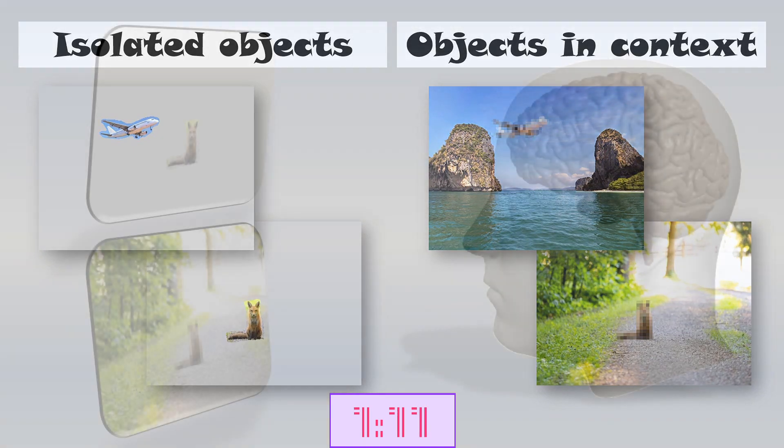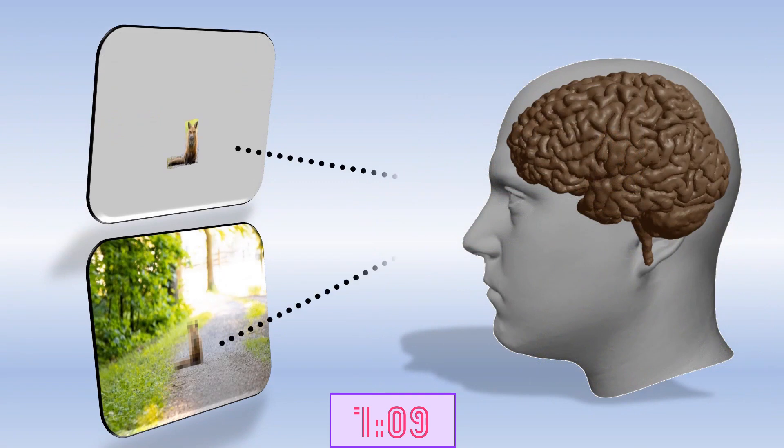The results showed that it takes about 160 milliseconds for an image of an object or a scene to reach the LOC and OPA brain regions respectively.